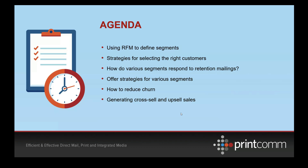We're going to focus a lot on data today and a little bit on offers. We'll start out talking about RFM, which is an acronym for Recency, Frequency, and Monetary, to define segments. We'll get into strategies for selecting the right customers, talk about how different segments respond to retention mailings, offer strategies for various segments, how to reduce churn, and some thoughts on cross-sell and upsell opportunities. We'll focus mainly on retention mailings, touching on reactivation and acquisition as they correlate.